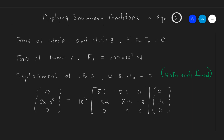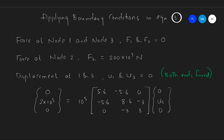Since U1 and U3 are 0, we can omit the 1st and 3rd row and column values of the stiffness matrix. Considering those values yields 0 forces, which gives us the equation: 2 × 10⁵ = 8.6 × 10⁵ × U2. From that equation, we can find the value of U2 as 0.2326 mm.